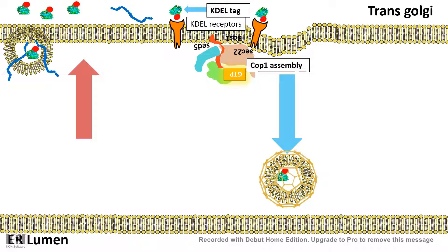Inside the ER lumen, the pH is very different from the trans-Golgi network. At this pH, the KDEL-containing protein dissociates from the KDEL receptor, and as a result the ER resident protein is delivered back to the ER. This is how stringent quality control protocols are maintained inside the cell, even if the protein was mistakenly delivered to the trans-Golgi network.